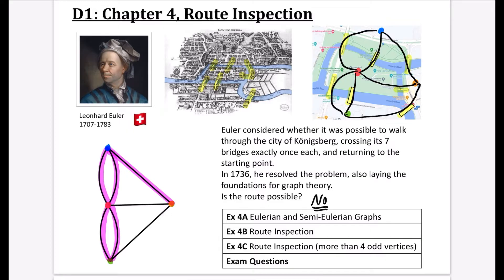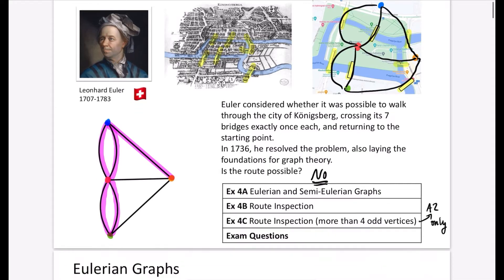This chapter is split into three sections: Eulerian and semi-Eulerian graphs (more graph theory), Route Inspection (exploring all edges on a network), and a more complex variation that is A2 only. If you are doing AS and not studying A2, you can skip that part in Exercise 4D.